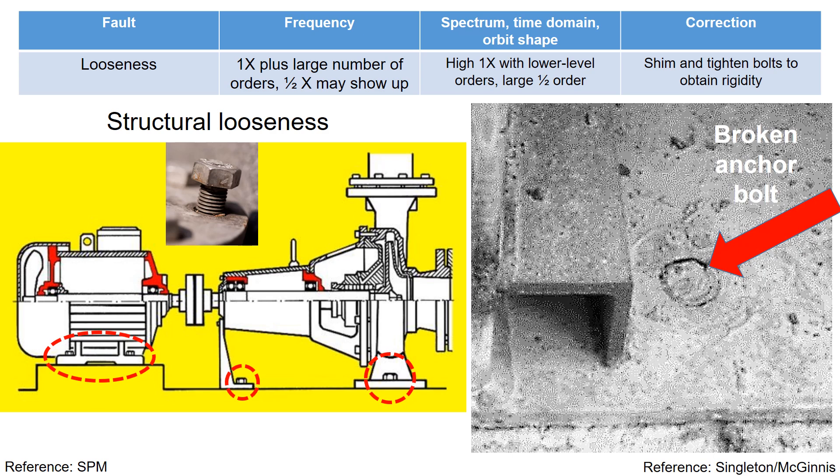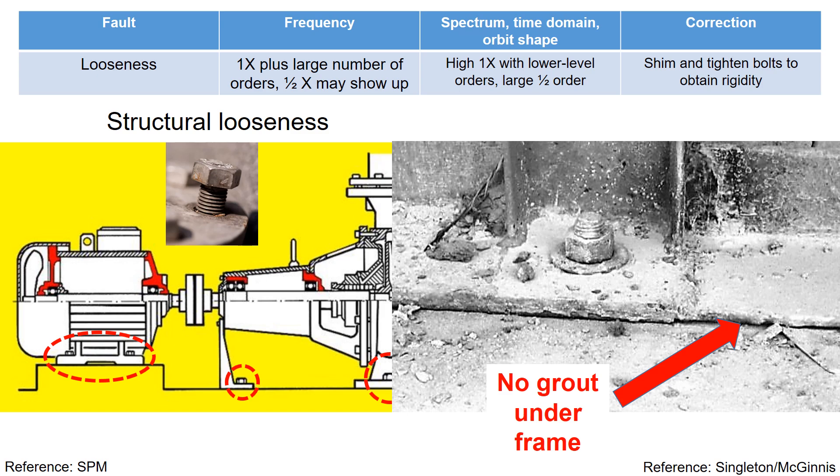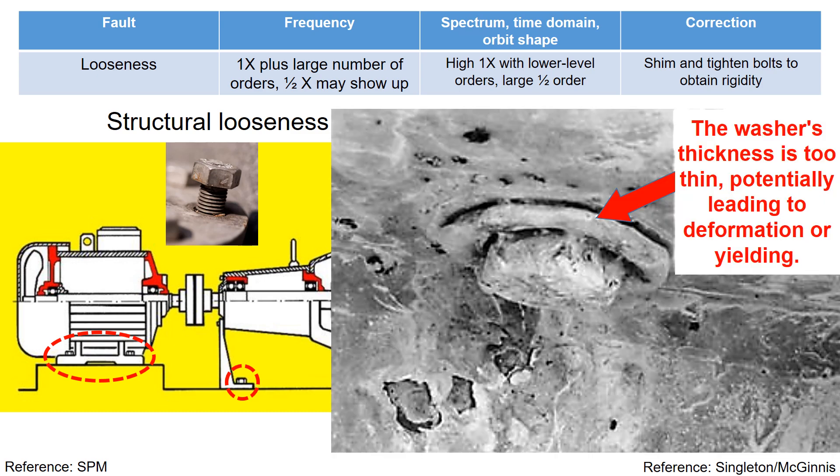Structural looseness can manifest in various ways, including broken anchor bolts. Also, the absence of grout in the frame can lead to structural looseness. And the thinness of the washer may pose a risk of deformation or yield, potentially resulting in structural looseness.